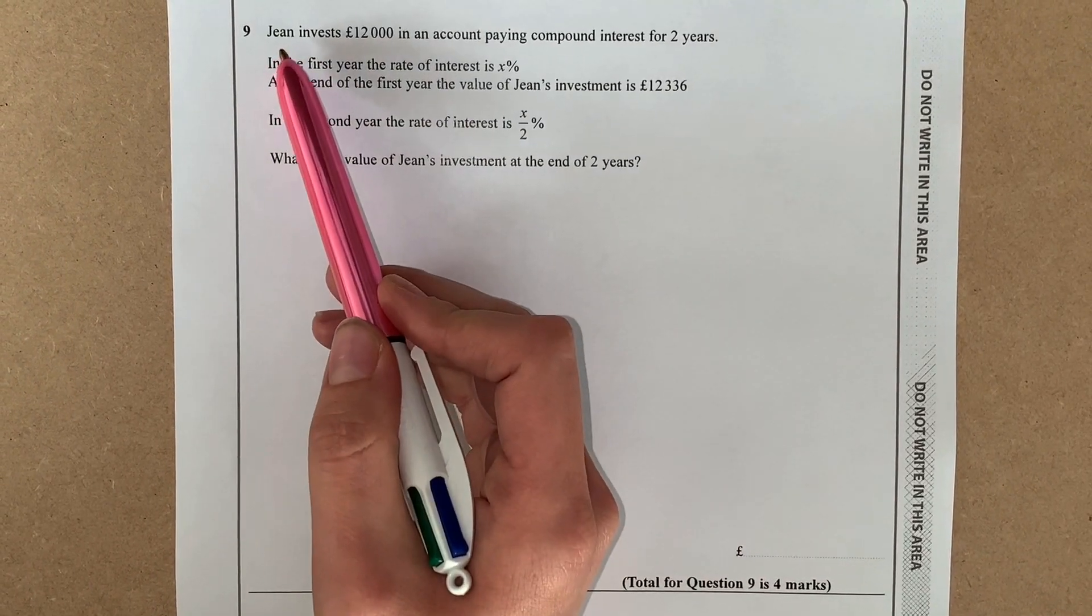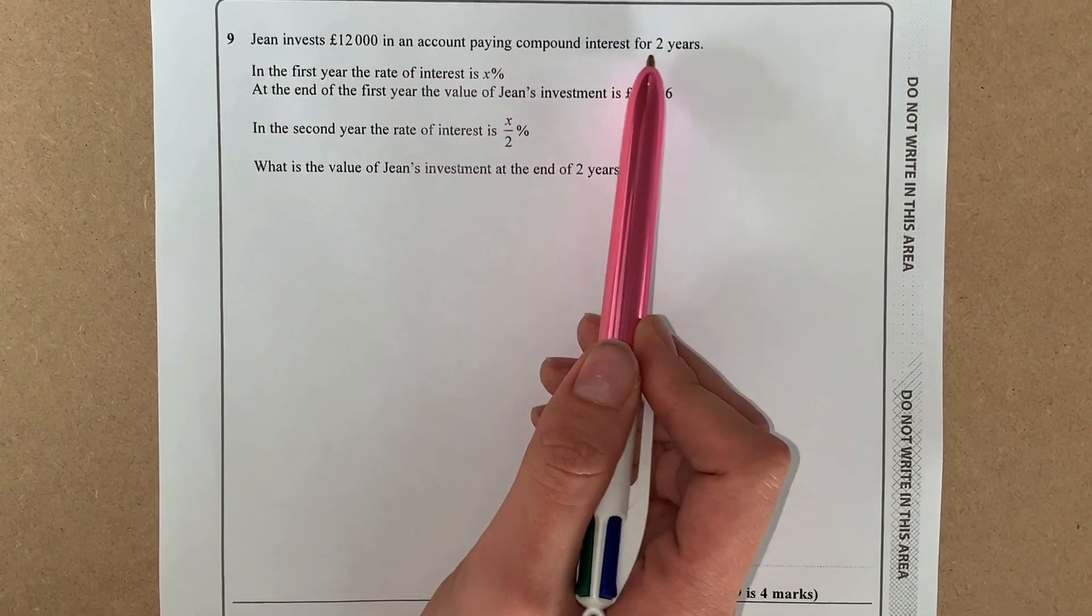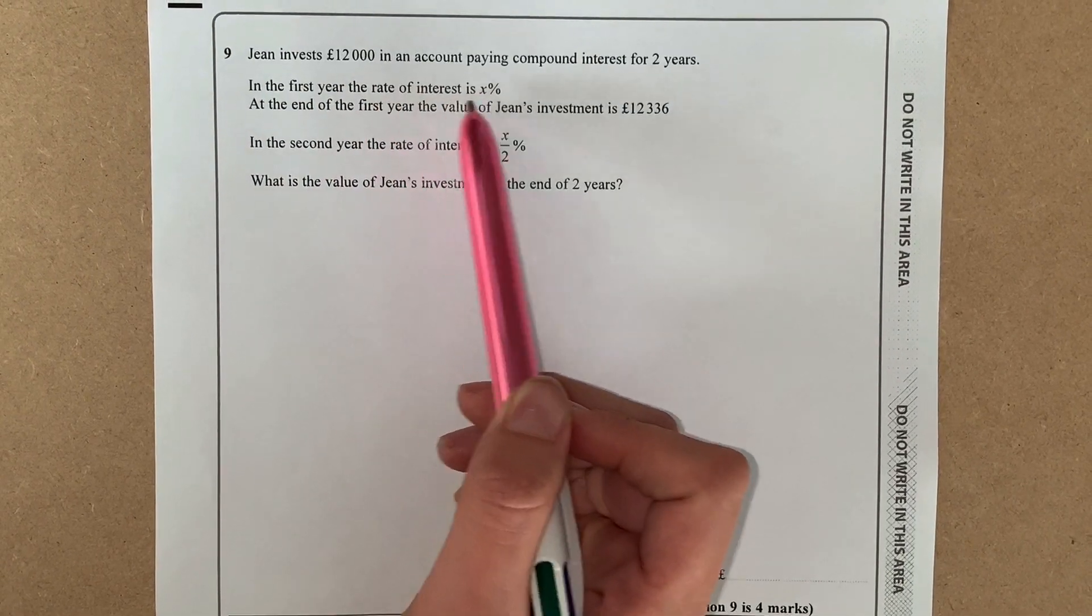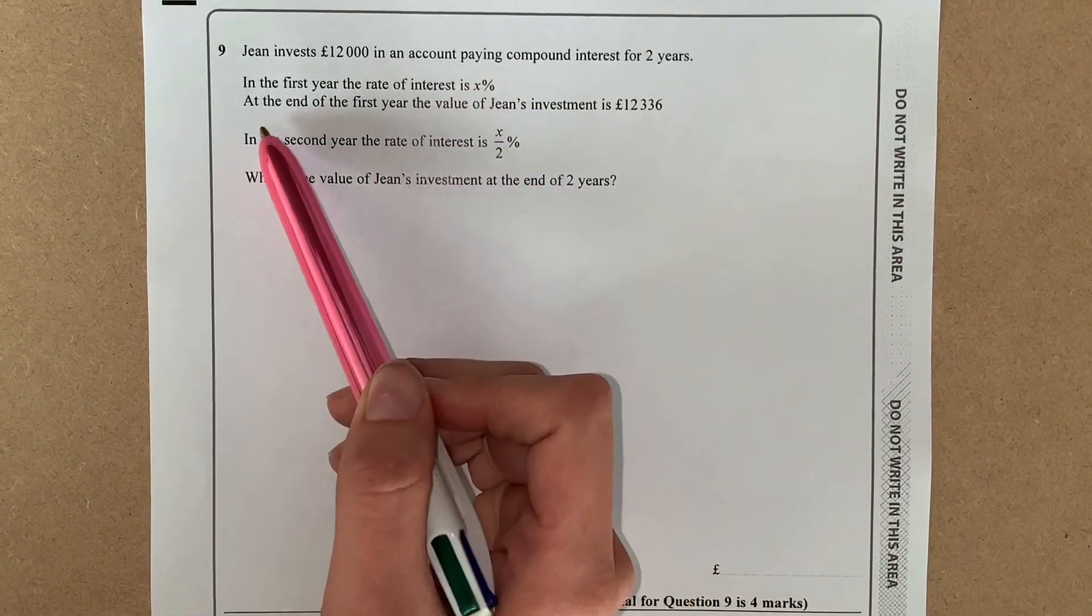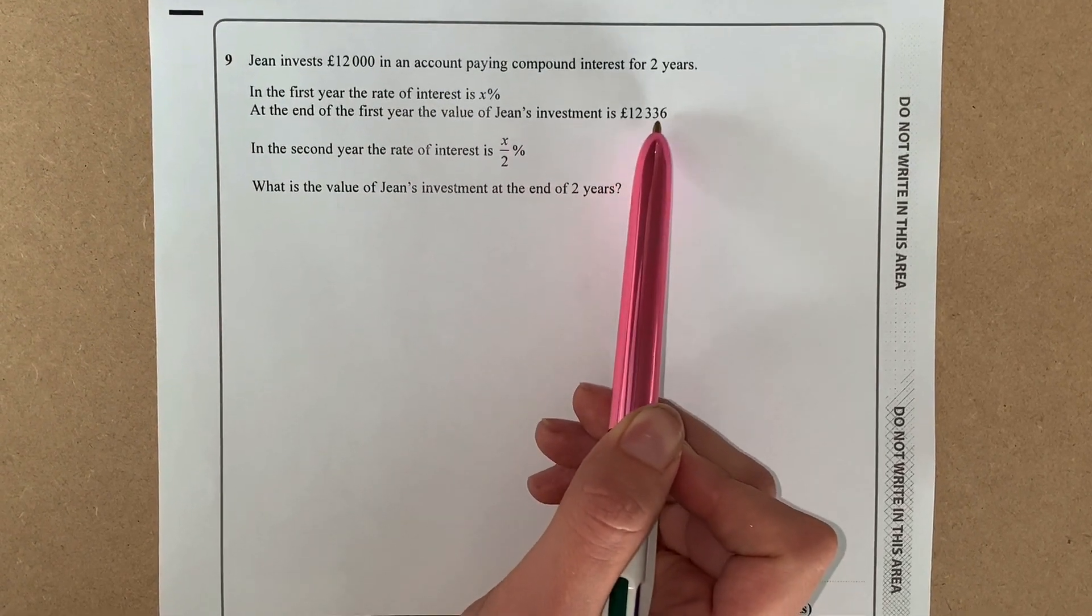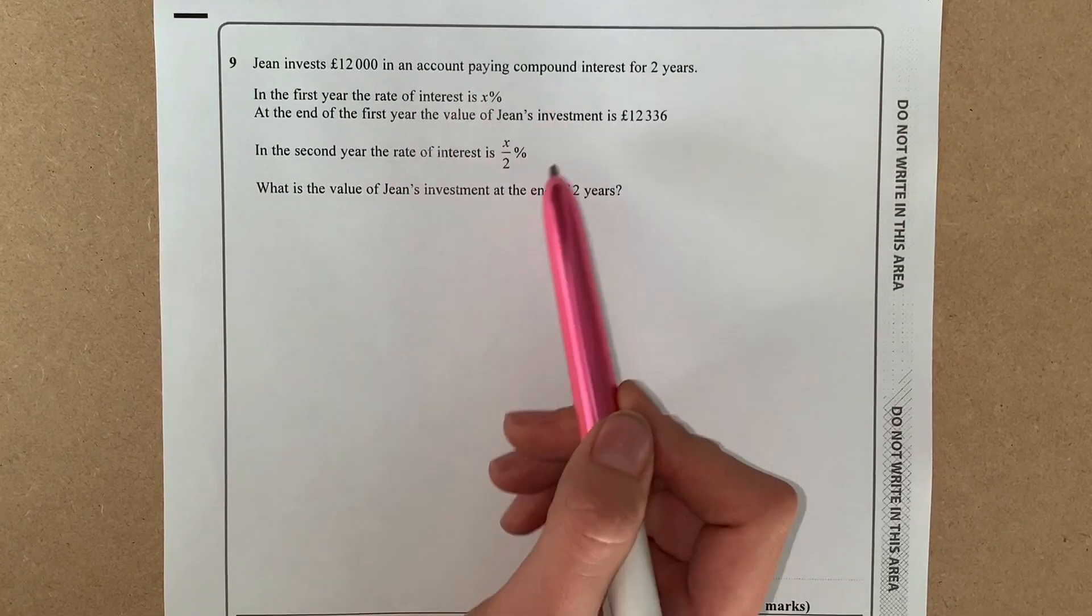If we just read the first line of the question: Jean invests £12,000 in an account paying compound interest for two years. In the first year the rate of interest is x percent, and at the end of the first year the value of Jean's investment is £12,336. So we know that when we're using compound interest we can use a multiplier, but we don't have a multiplier because the interest rate is x percent.